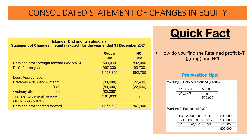We transfer these to the statement of changes in equity for the year ended 31 December 2021. For the retained profit brought forward, we include the amounts calculated earlier: for the group we have 500,000, for the NCI we have 802,000. After that, we transfer the profit for the year figure calculated in the consolidated statement of profit or loss — for the group it will be 997,300 and for the NCI it will be 90,700.